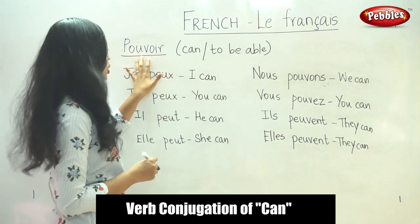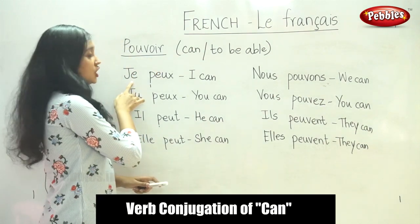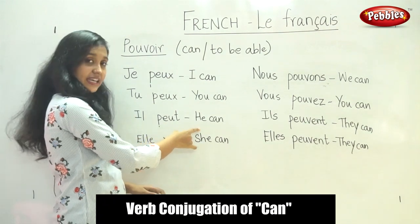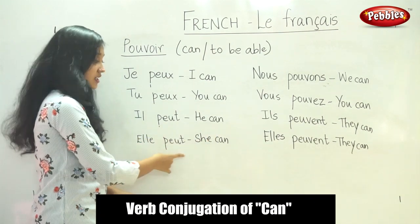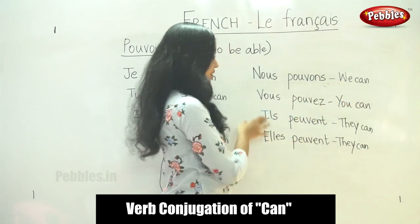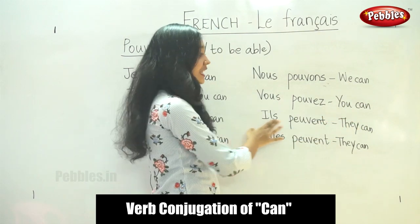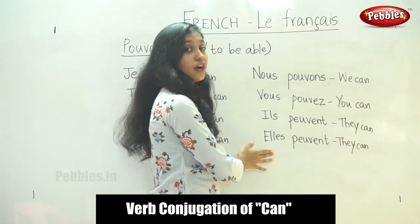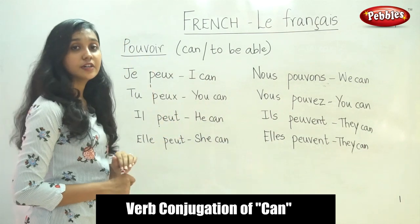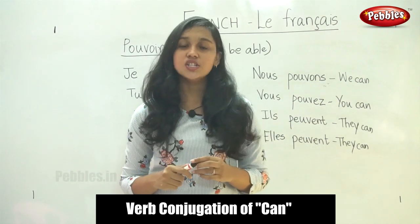As I told you, the conjugation for POUVOIR is similar to VOULOIR conjugation, and it is as follows: JE PEUX — I can. TU PEUX — you can. IL PEUT — he can. ELLE PEUT — she can. NOUS POUVONS — we can. VOUS POUVEZ — you can. ILS PEUVENT — they can. ELLES PEUVENT — they can. I hope you understood the conjugation of the verbs VOULOIR and POUVOIR. VOULOIR means 'to want' and POUVOIR means 'can' or 'to be able.'